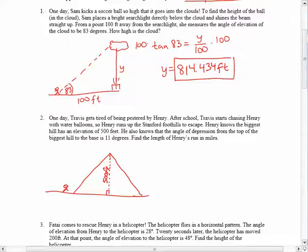We also know that the angle of depression from the top of the hill to the base is 11 degrees. So if Henry was standing at the top of the mountain, the horizon would be going that way. And the angle of depression, meaning looking down from the horizon, would be 11 degrees.